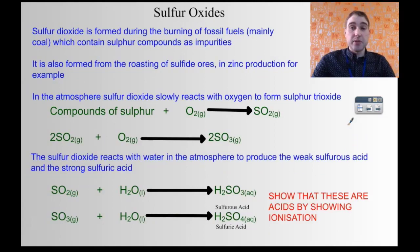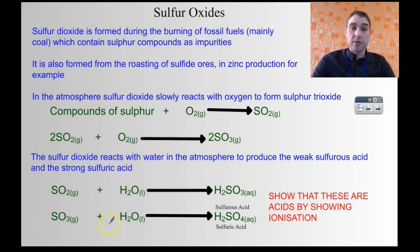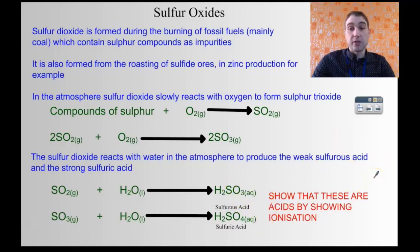Oxides of sulfur are produced whenever you burn anything that contains sulfur in oxygen-rich environments. Coal is a good example — coal contains a lot of sulfur. When you heat up the sulfur, it reacts with oxygen to produce sulfur dioxide. Sulfur dioxide then reacts in the atmosphere with oxygen to produce sulfur trioxide. Both sulfur dioxide and sulfur trioxide will dissolve in atmospheric water, producing weak sulfurous acid and strong sulfuric acid respectively, and that again reduces the pH.